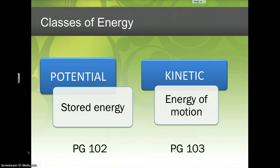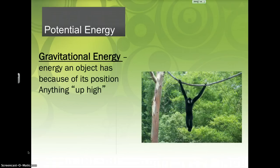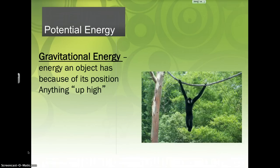We're going to start with potential because there's only a couple types we haven't talked about. The two main types of potential energy are gravitational and chemical. Gravitational is the one we've talked about for the last week — basically when you lift something up high, the higher it gets, the more potential energy it has because the force of gravity can pull it down. The skater on a ramp or a pendulum are examples of gravitational potential energy.